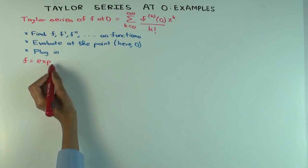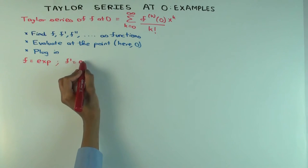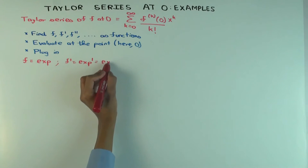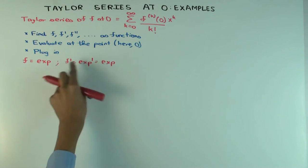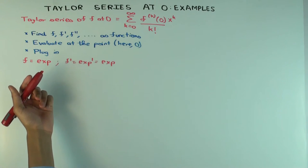So let's do an example: f is the exponential function. What do we know about the derivative of the exponential function? It's the function itself. And now that you have a repetition, you know that when you differentiate a second time, you still get the function itself.